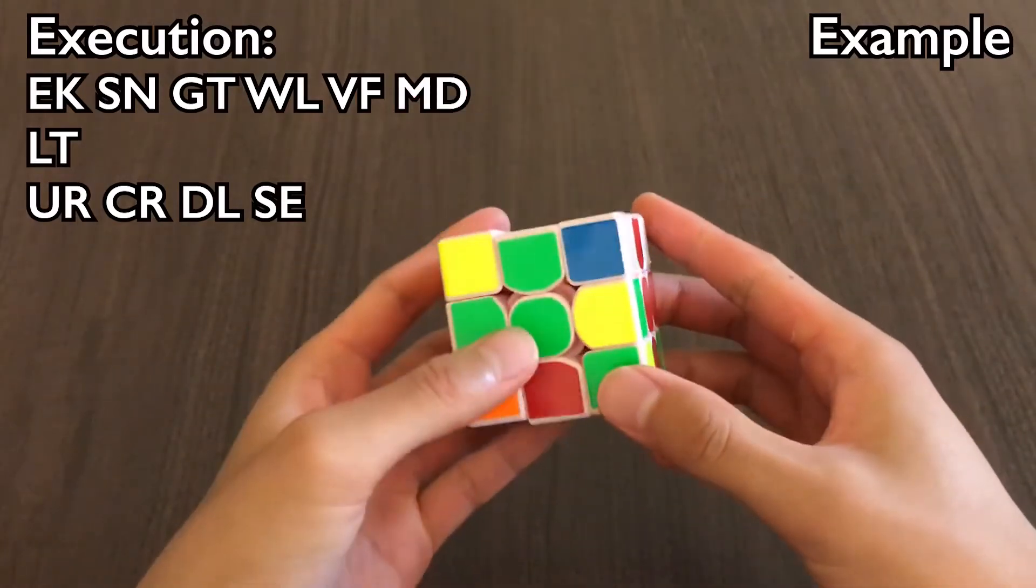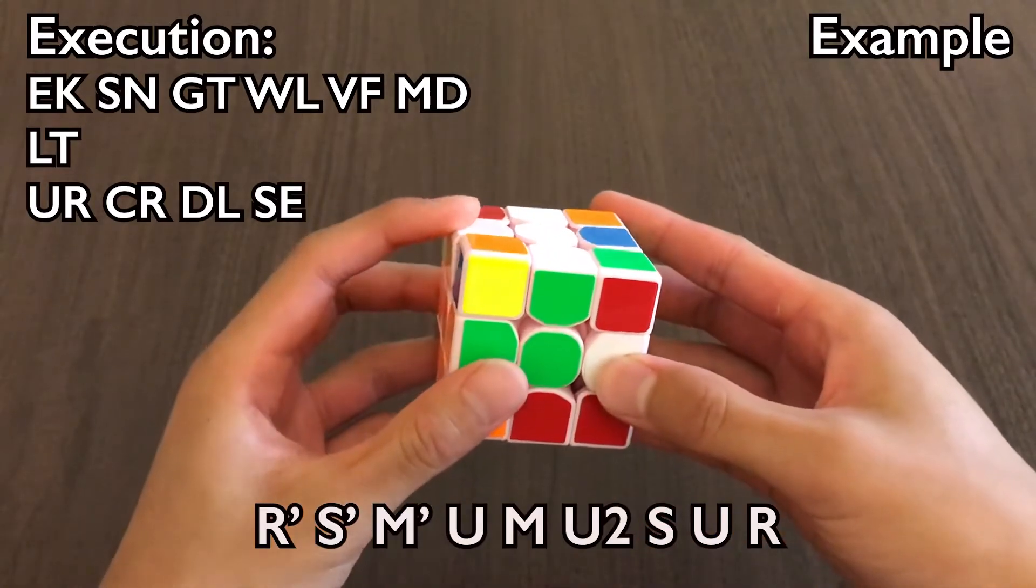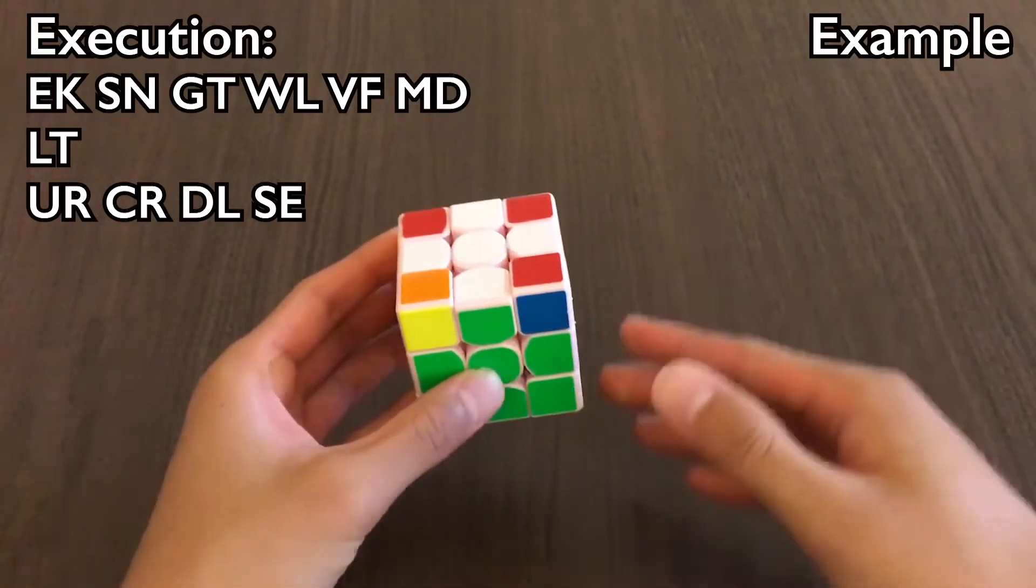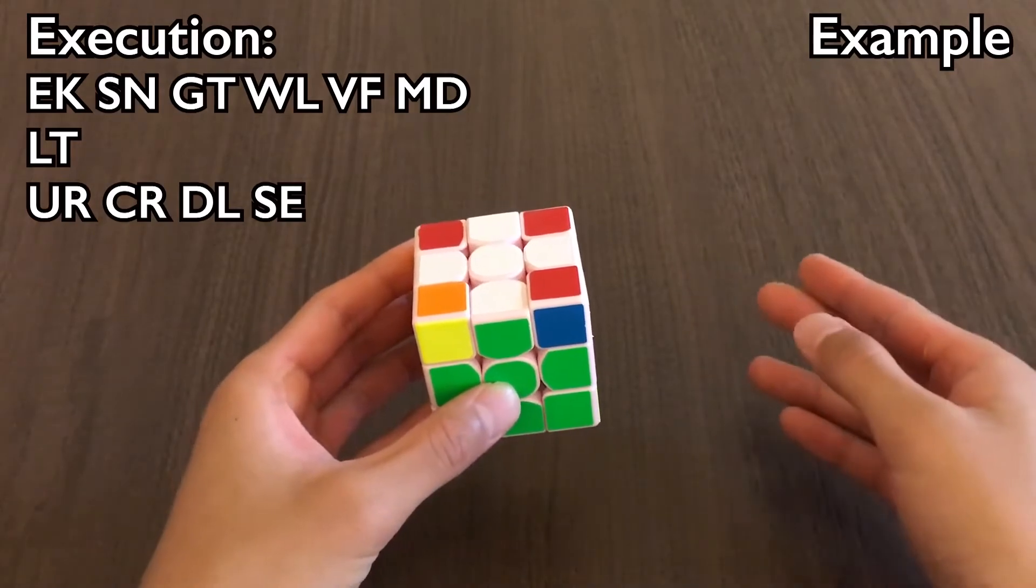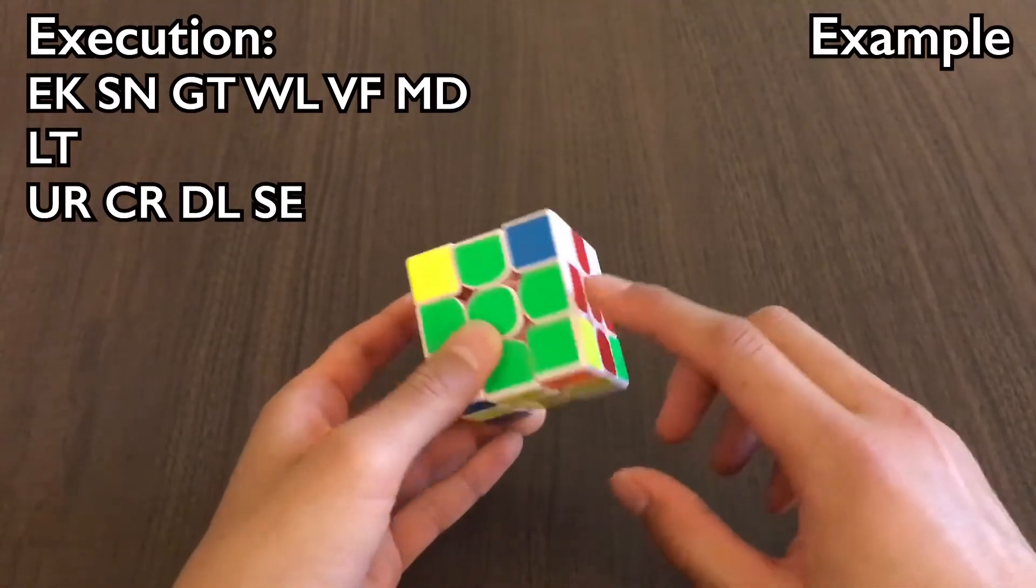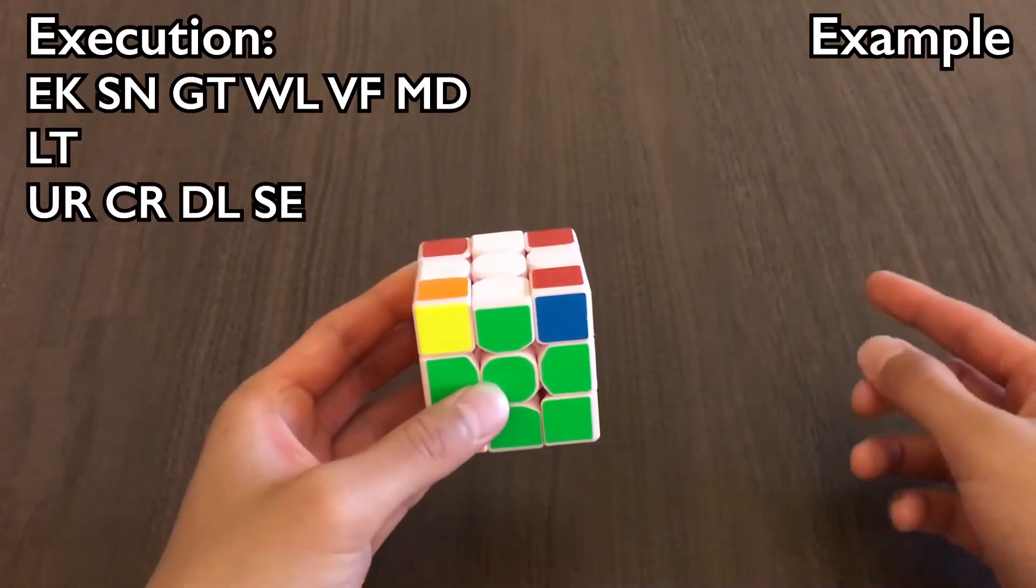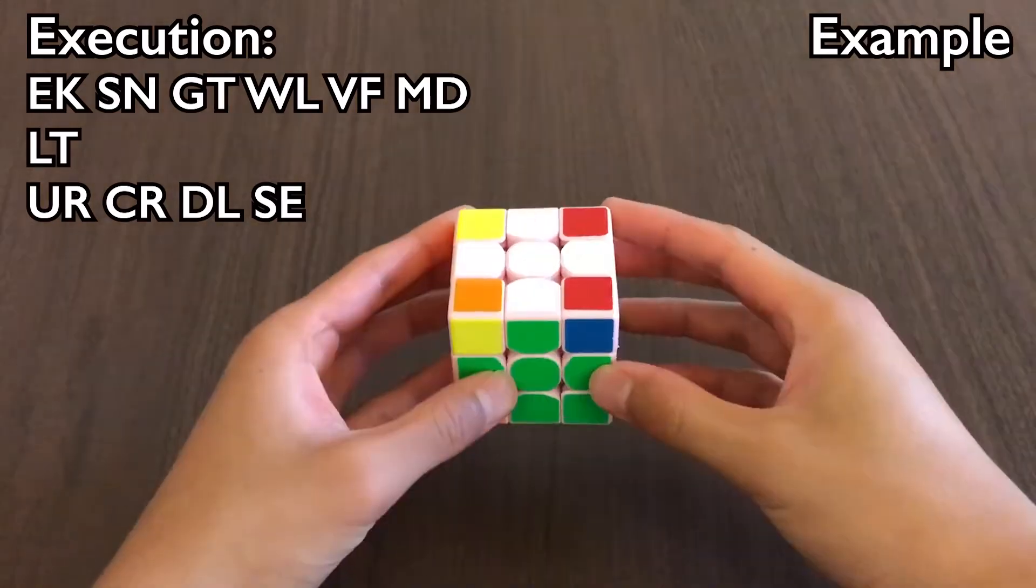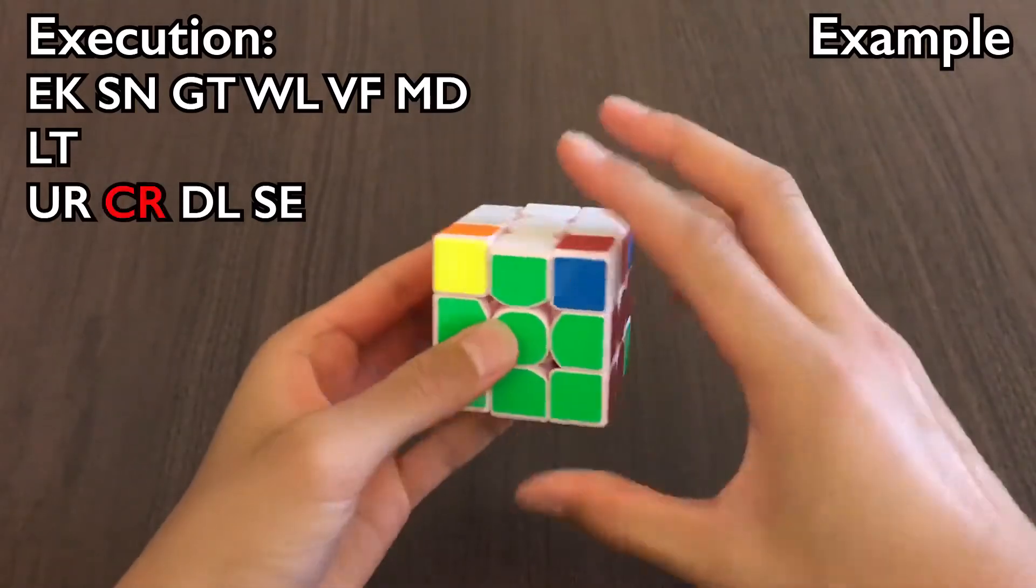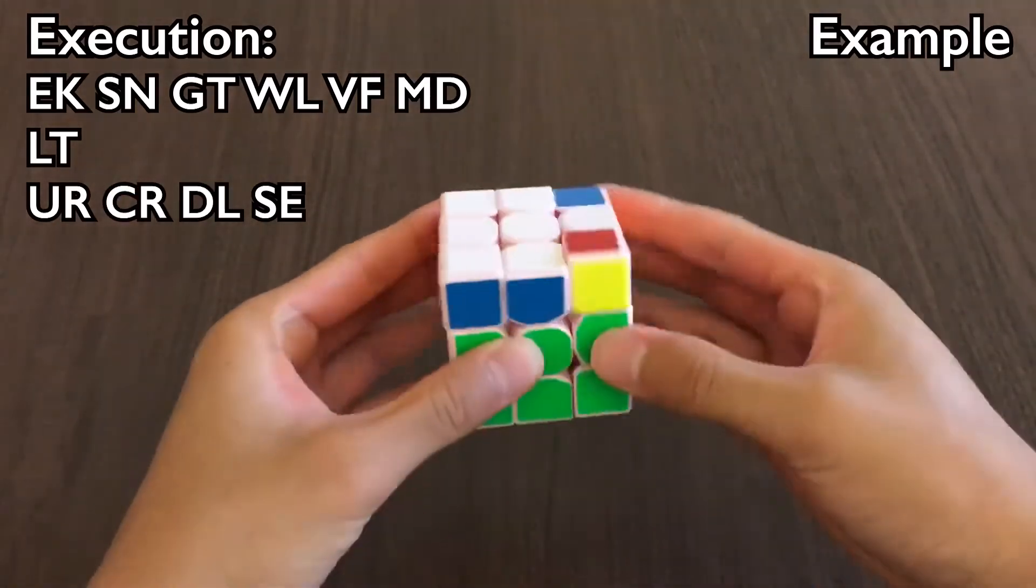And here I'm at my last edge, L, and the 2E2E for that is just R' into this alg. Remember how we combined the last edge and the first corner into one image, which was LT? Well, that made sense because I just executed L with a 2E2E, and now I'm going to do T with old Pacman. So there was no delay between L and T. Now to finish corners, U, R, C, R, D, L, S, E.